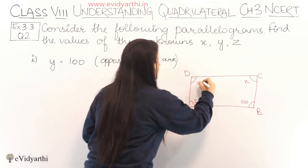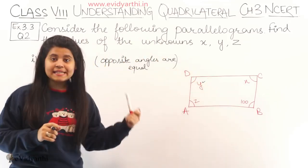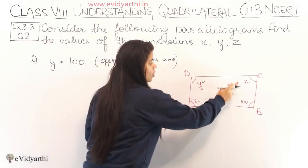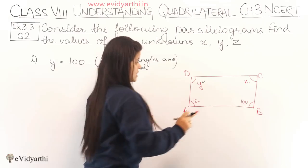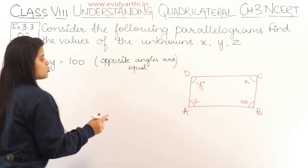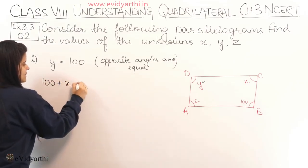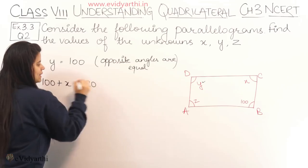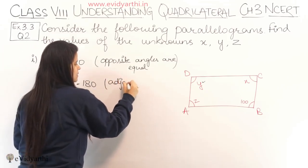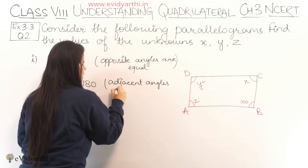Next, we find x. We know that adjacent angles are supplementary. So 100° and x are adjacent angles, and 100° and z are also adjacent angles. Taking either pair: 100 + x = 180°. The reason: adjacent angles are supplementary.